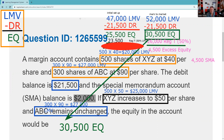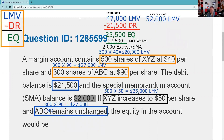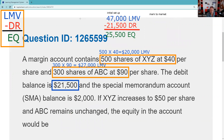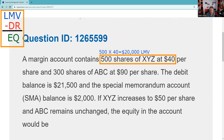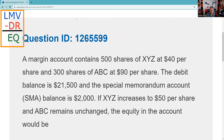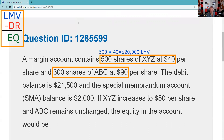Let's do a quick review. I think this is overkill — you can have three or four margin questions on the Series 7, and nothing this complex. They're very basic. This is an area where test takers spend way too much time. The most important thing in margin is to know the classical margin equation long and the classical margin equation short. We figured out the long market value first: $47,000, from 500 shares at $40 and 300 shares at $90.